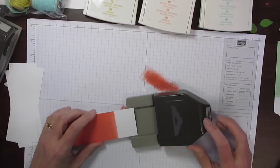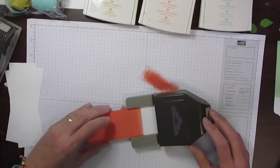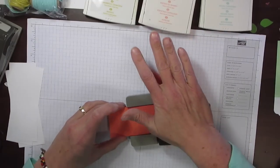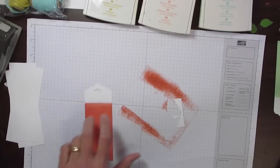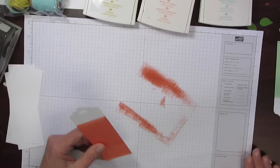I'm going to come in with my Scallop Tag Topper Punch, and I'm going to slide that piece of cardstock right in there until it butts up, until it stops at the top, and punch down. That gives me the top of my gift tag.